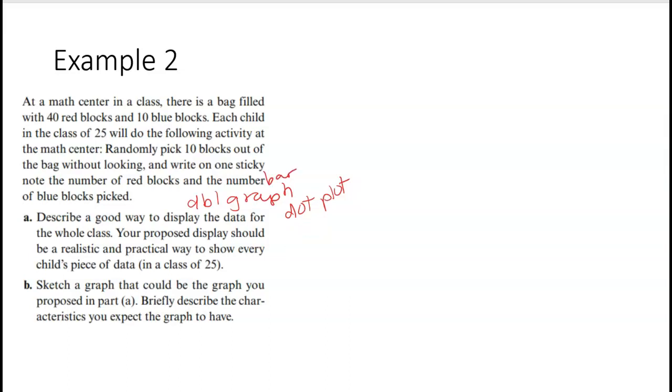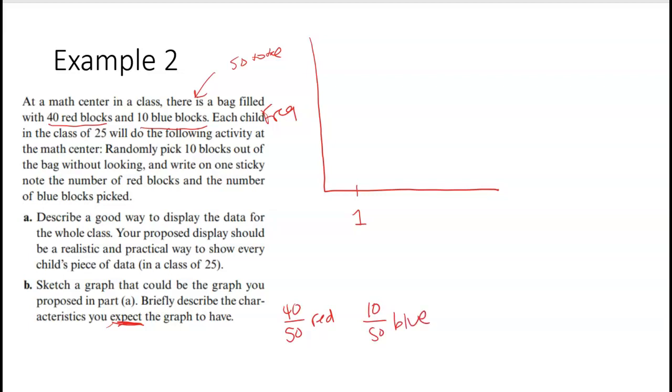Sketch a graph that could be the graph you proposed and briefly describe the characteristics you expect to have. Let's do a few. So let's do a bar graph here. Remember that for bar graphs, we've got frequency over here. And so this is our first child is going to grab. And maybe how would I know how many red and blue? So maybe let's go back and think about what we might expect the graph to look like. If we know that there are 40 red and 10 blue, there are 50 total.